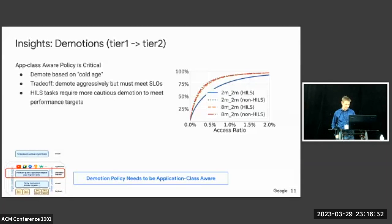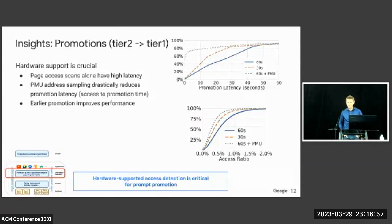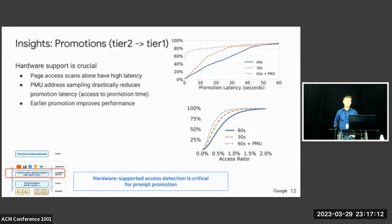On the promotion side — tier two into tier one — hardware support was crucial to quickly detect pages stuck in the second tier being frequently accessed. We started with page access scans, periodically looking at which pages were being accessed and promoting those, but this was too slow to meet our SLOs. By adding PMU address sampling, we could drastically reduce the time to promotion. The chart shows the distribution pulled far to the left with PMU sampling, and tier-two accesses are reduced significantly.